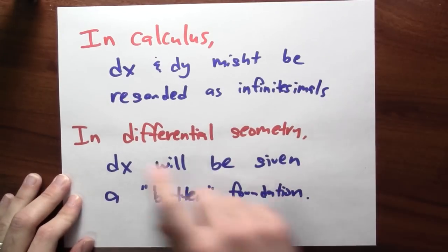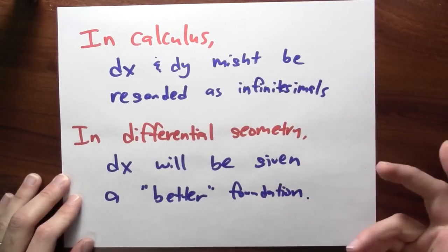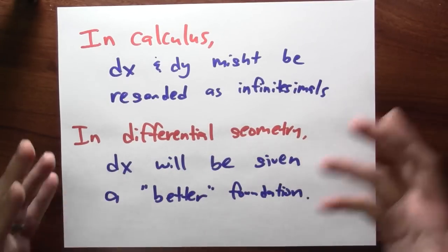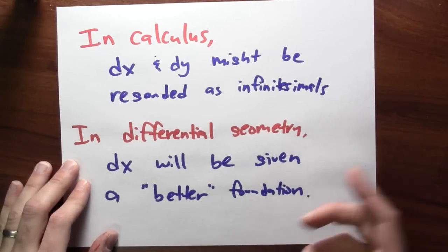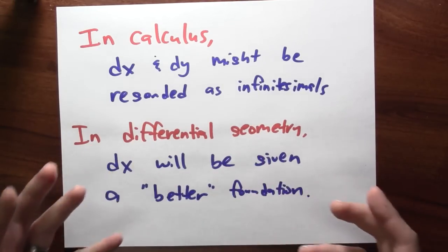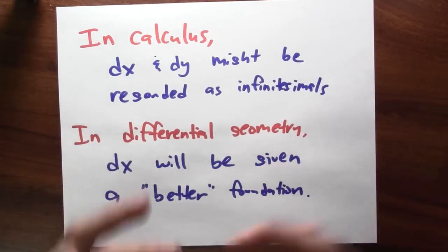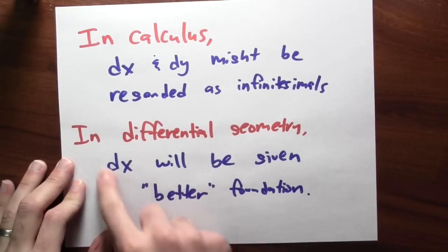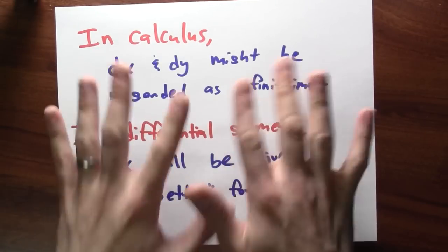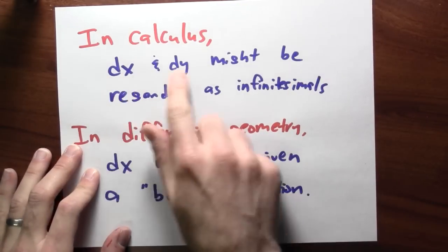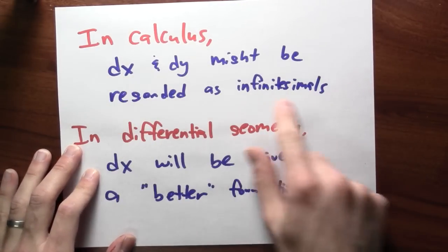Now, later on in your life, when you take some course, say a differential geometry course, dx will then be given some better foundation, right? dx will be revealed to be a differential form or a co-vector. I mean, you'll have some actual interpretation of dx. But for the time being, you know, if you really want to, you can regard these things as infinitesimal quantities.